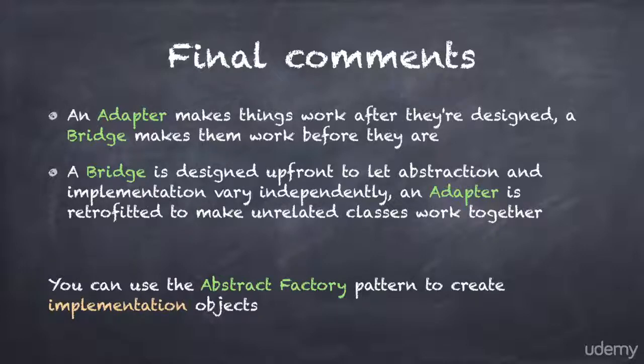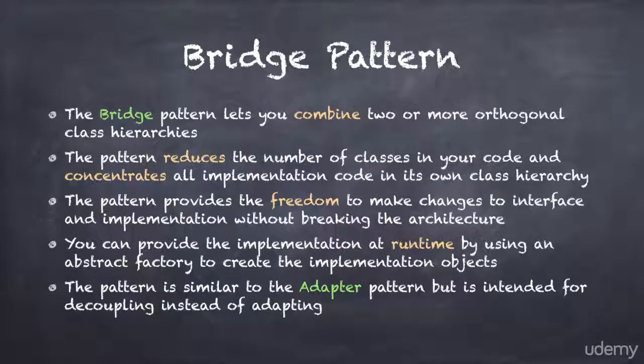Here is a summary of what we've learned in this lecture. The bridge pattern lets you combine two or more orthogonal class hierarchies. The pattern reduces the number of classes in your code and concentrates all implementation code in its own class hierarchy. The pattern provides the freedom to make changes to interface and implementation without breaking the architecture. You can provide the implementation at runtime by using an abstract factory to create the implementation objects. The pattern is similar to the adapter pattern, but it is intended for decoupling instead of adapting.